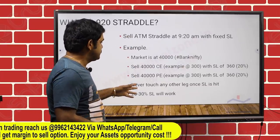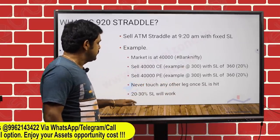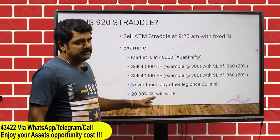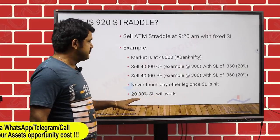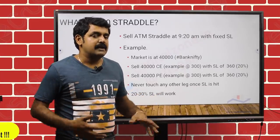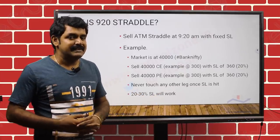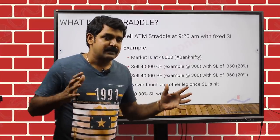Never touch the other leg — it's not for trailing. Any stop loss will work, 20 to 50 percent. Now we are going to see not the 920 straddle itself, but how we can adjust this 920 straddle in intraday.